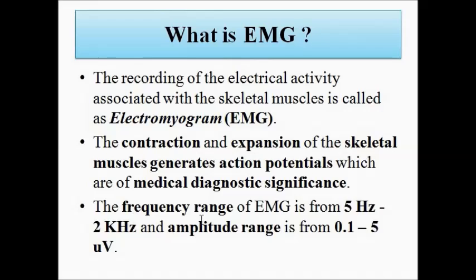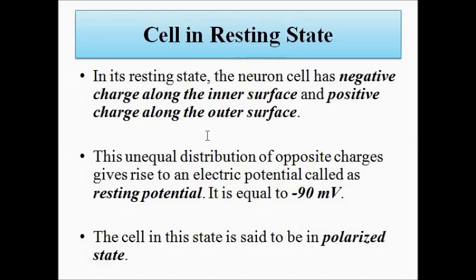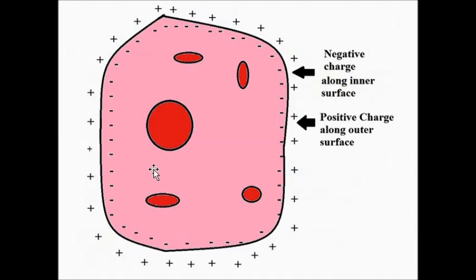That is where biomedical signal conditioning and processing comes into play. The generation of the electromyogram potential follows the same concept as with any other cell — the same concept used in ECG and EEG. The principle is that the cell in the resting state has a negative charge along the inner surface and a positive charge along the outer surface, which applies to the skeletal muscle cell as well.